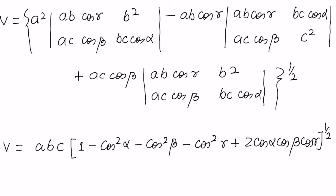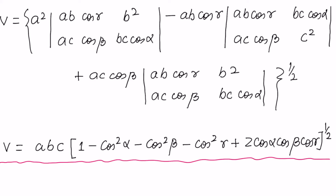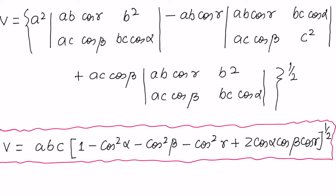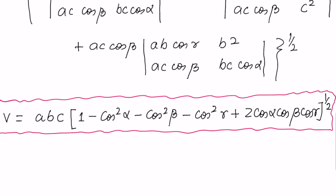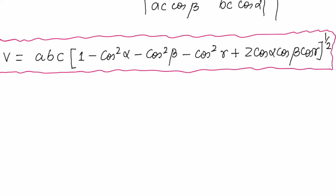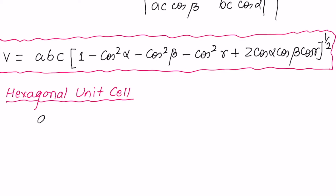Using this general formula we can specialize it to any specific unit cell under consideration. Let us look at the hexagonal unit cell. In this unit cell we have a = b, and α = β = 90°.